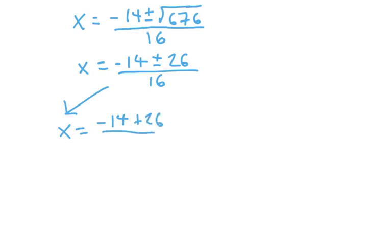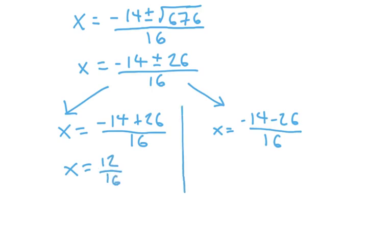So, I'm going to look at this as two separate solutions, which they are: negative 14 plus 26 over 16 and negative 14 minus 26 over 16. I may have said 14 in the denominator there, but it's 16.